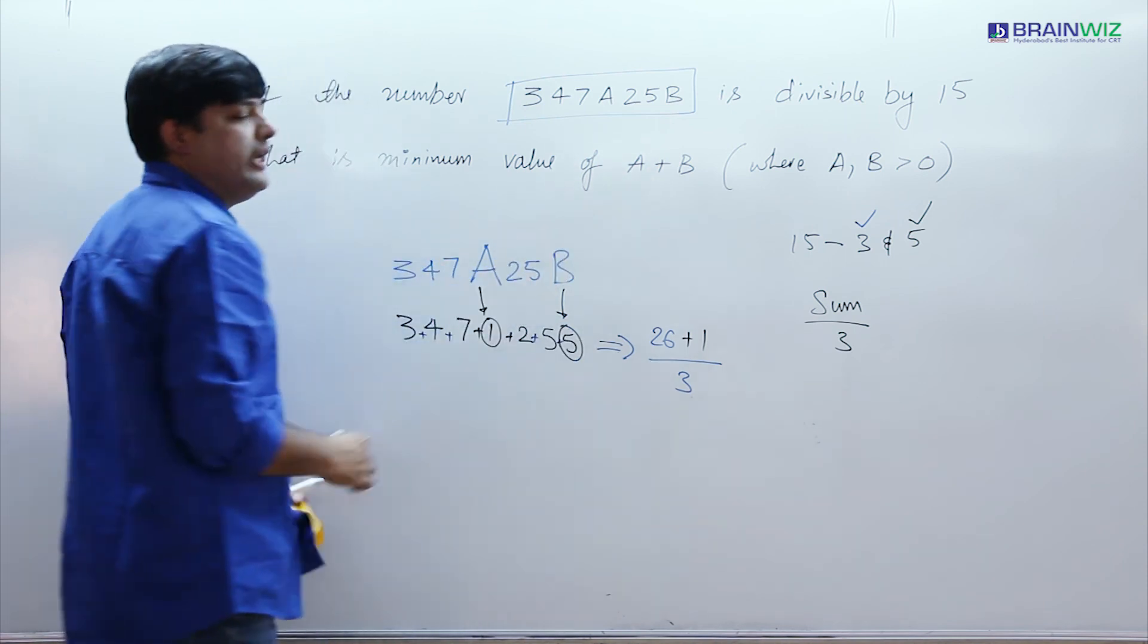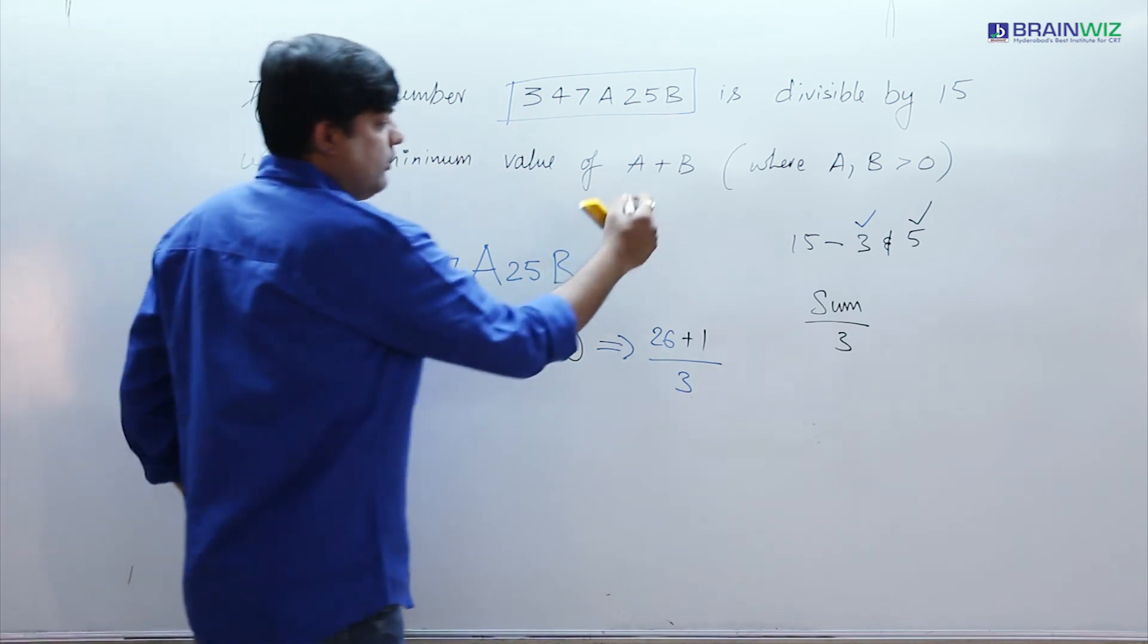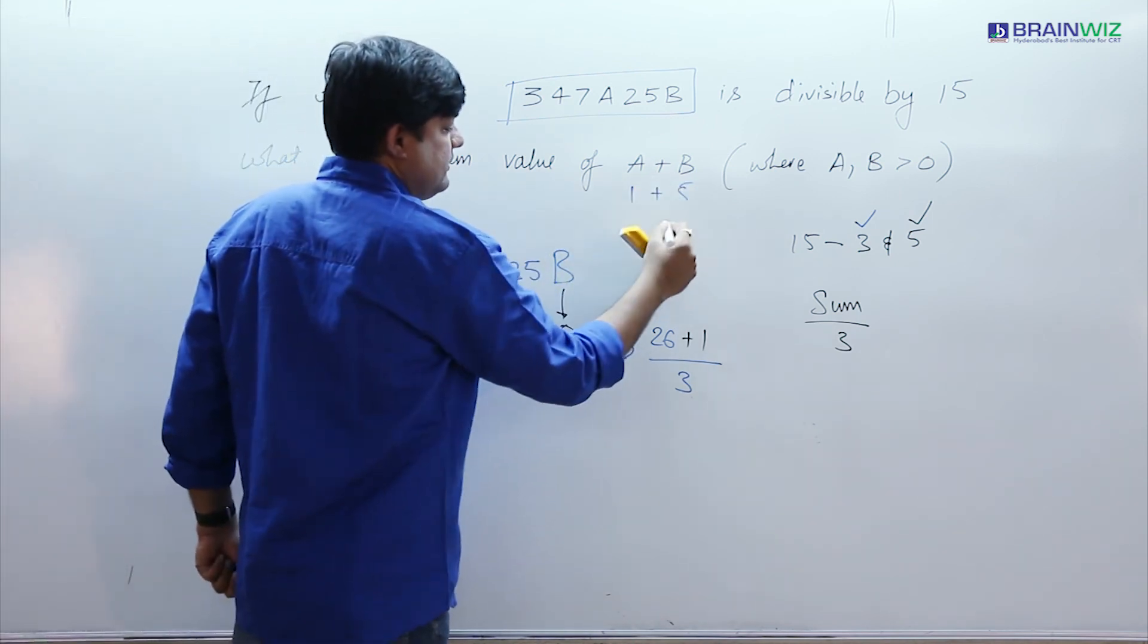So I wanted to find out the value of A plus B. Then it can be 1 plus 5, that is 6.